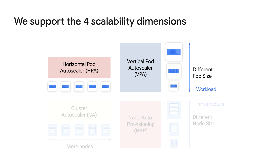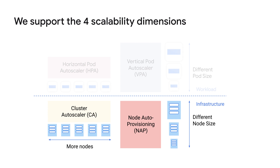Horizontal Pod Autoscaling and Vertical Pod Autoscaling are two different ways to scale your Kubernetes workloads. HPA automatically adds or removes pods to a deployment or replication controller based on CPU utilization. VPA automatically increases or decreases the resources allocated to a pod based on CPU utilization. Cluster Autoscaler automatically adds or removes nodes from your cluster based on resource demand, while Node Autoprovisioning automatically creates new node pools when needed.